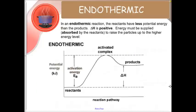Our first energy diagram is for an endothermic reaction. In an endothermic reaction, the reactants have less potential energy than the products. The change in H, the change in energy, is positive. Energy must be supplied, meaning absorbed by the reactants, to raise the particles up to the higher energy level. So we are going to start low and as we add our activation energy, we're going to break all the bonds holding the reactants together.